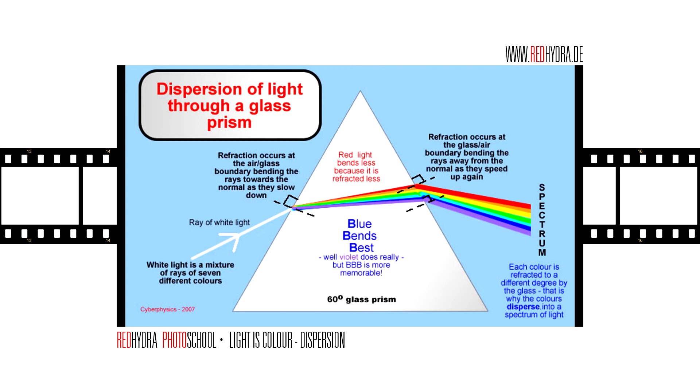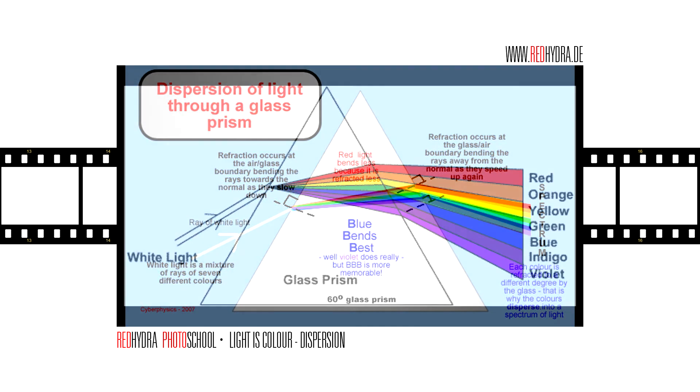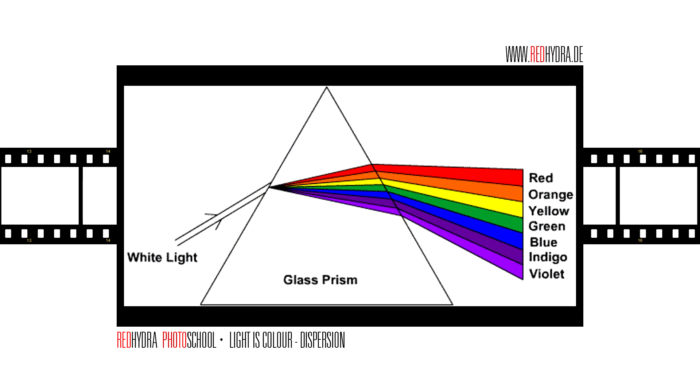Also, by the way, chromatic aberration is actually some kind of dispersion. It has the same roots, but it comes up when you have a poorly built lens. That's another lecture we will come to when we talk about image errors. Back to the topic.